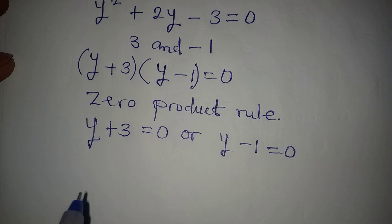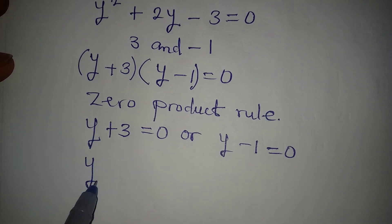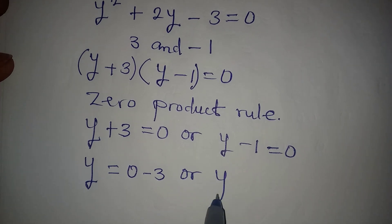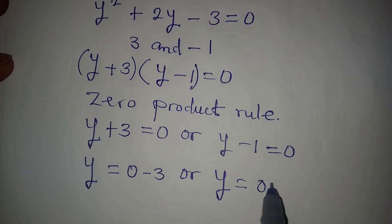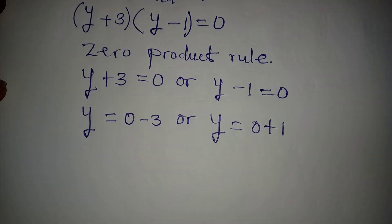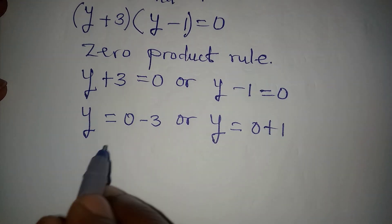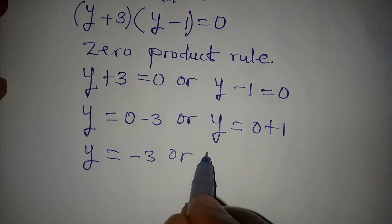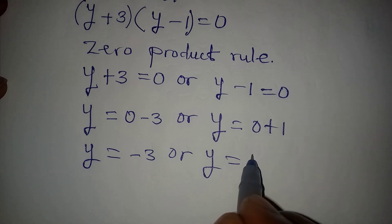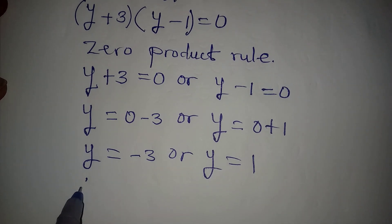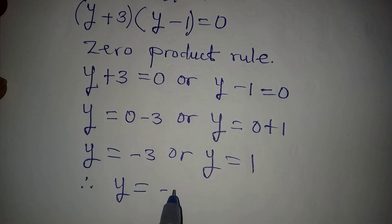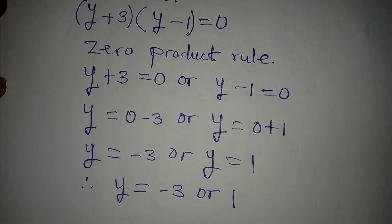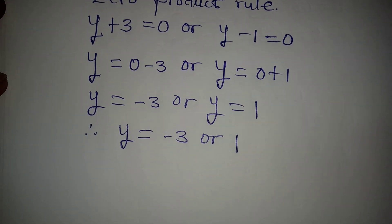From here, y will be equal to 0 minus 3, or y is equal to 0 plus 1. So y equals minus 3, or y equals plus 1. Therefore y is equal to minus 3 or 1.